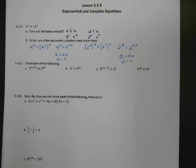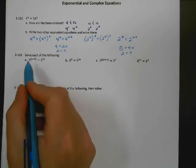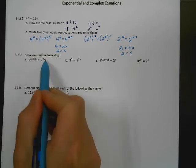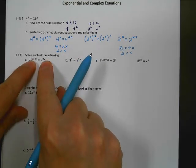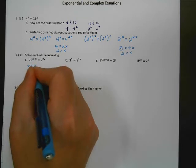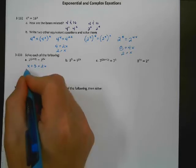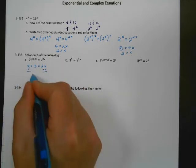Let's do the next problems using that same property. Here I see that I have the same base, and since they're equal, the exponents have to be equal as well. So looking inside the problem, if the bases are the same, the exponents are also the same. I'm going to write the two exponents: x plus 3 has to equal 2x. Subtract x from both sides and find that x equals 3.